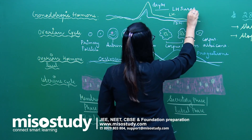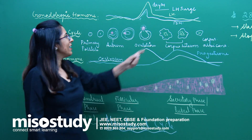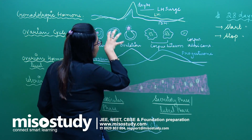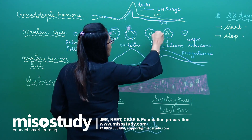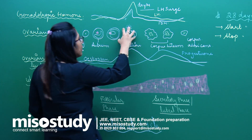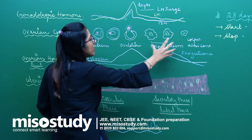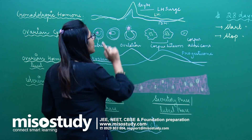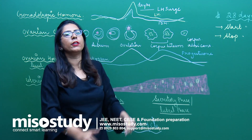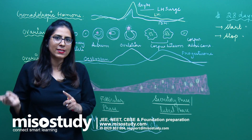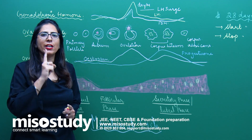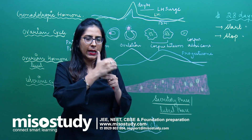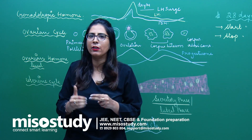The LH surge is one of the very important topics for your NEET examination. After the oocyte is released, the remaining follicular structure forms the corpus luteum. The oocyte, present at the boundary of the ovary, enters the fallopian tube and travels to the ampullary-isthmic portion, where it waits for the sperm so that fertilization can happen.